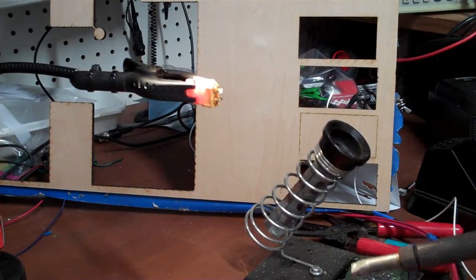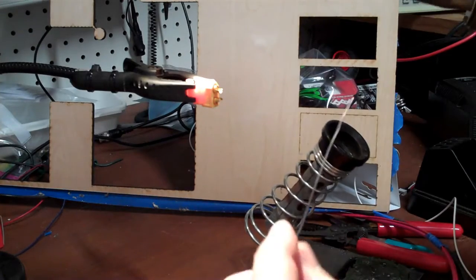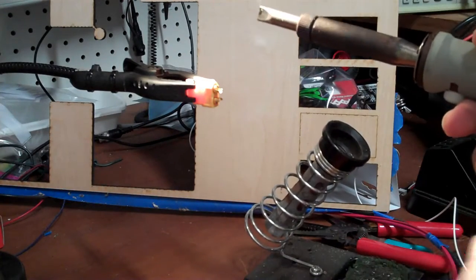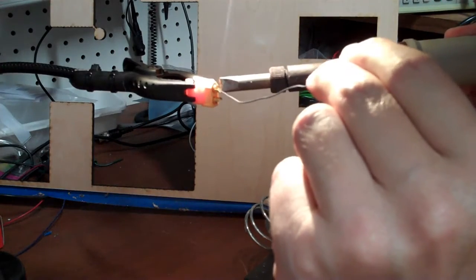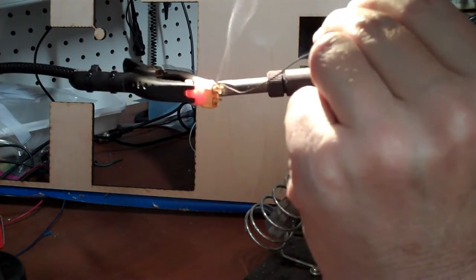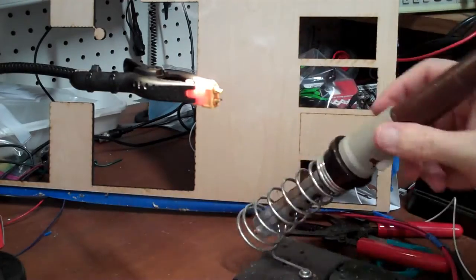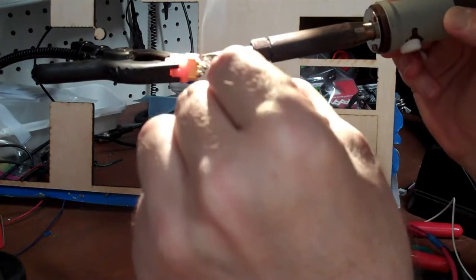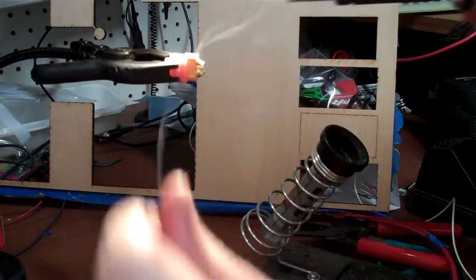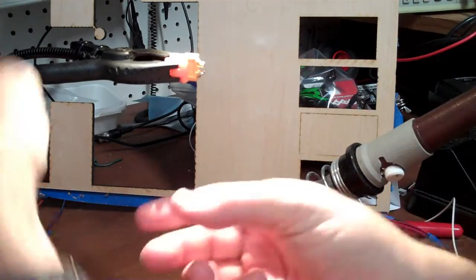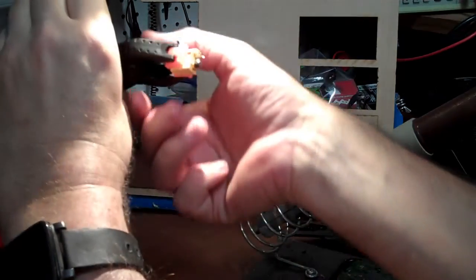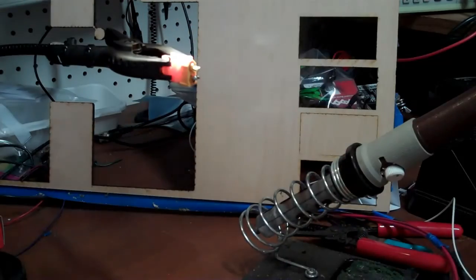When soldering these XT60 connectors, I get out the big soldering iron. I like to fill the connector body with solder first. And I'm doing opposite sides here so that one side doesn't get too hot. It gives it a chance to cool down.